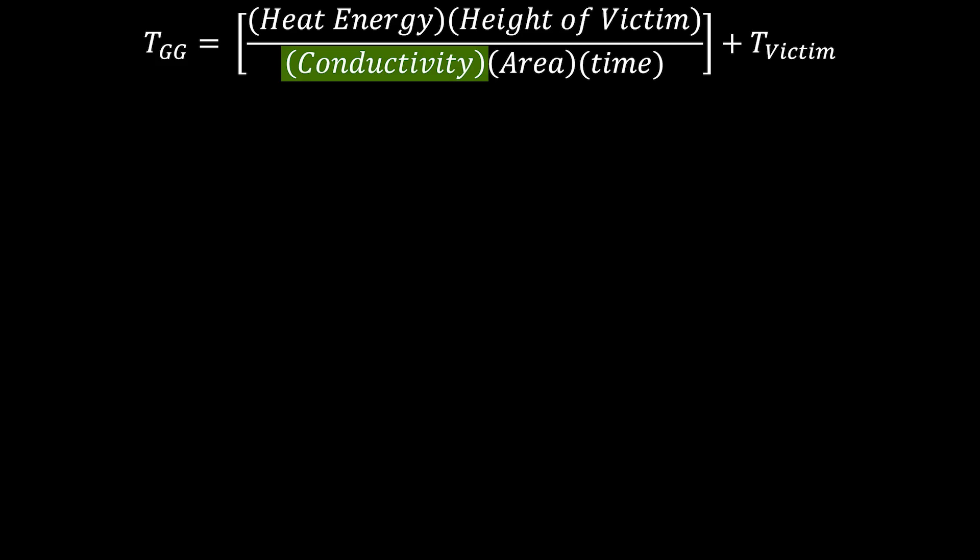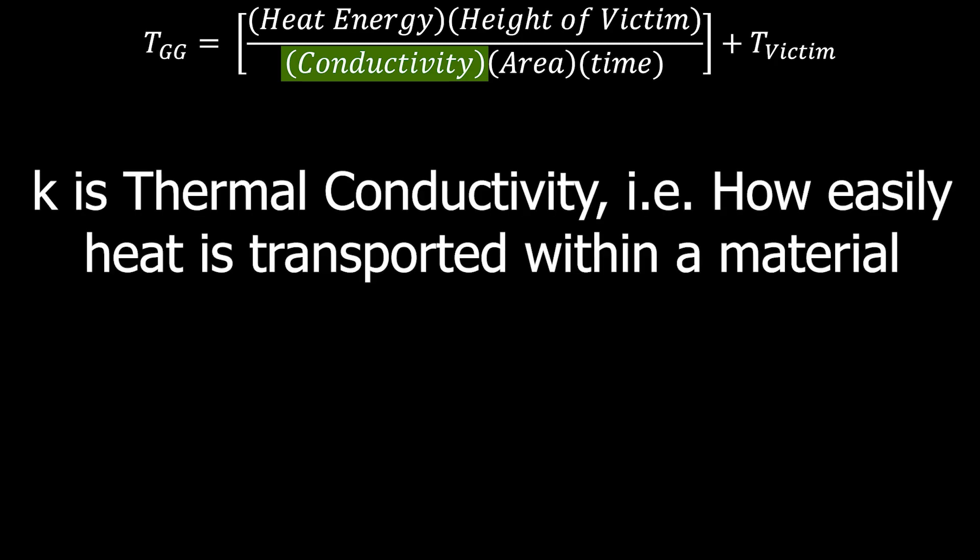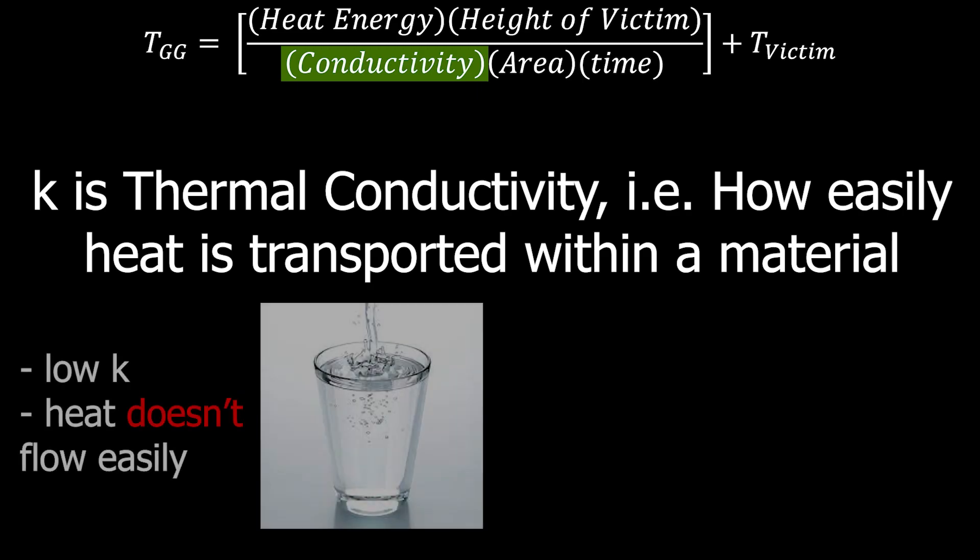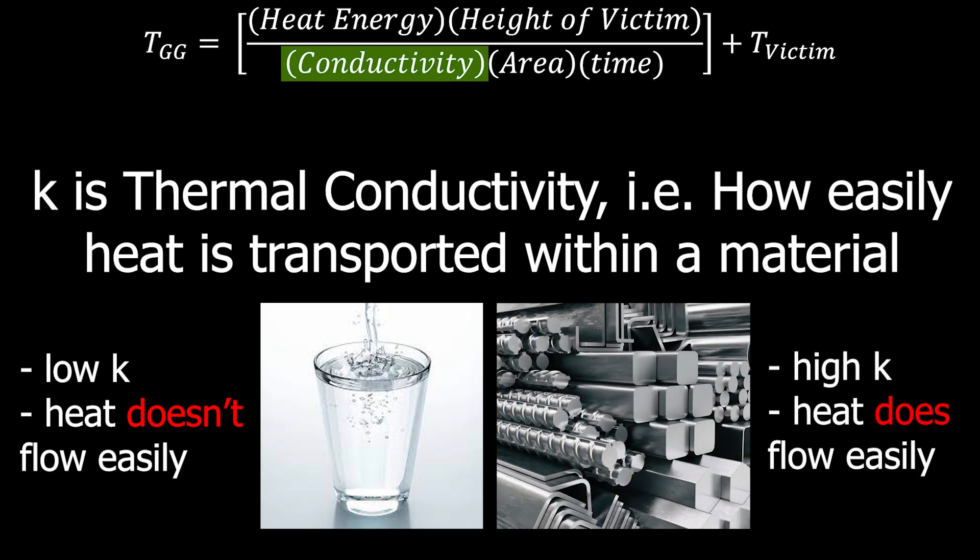And finally, we need to calculate the thermal conductivity, K, of the human body. Crash course on conductivity. It's the measure of how easily heat is transported throughout the material. So, as we all know, it takes a long time to bring water to a boil, but a very short time to heat up the metal pot that the water is in. This is because water has a low K and is a thermal insulator, while metal has a much higher K and conducts heat very easily.